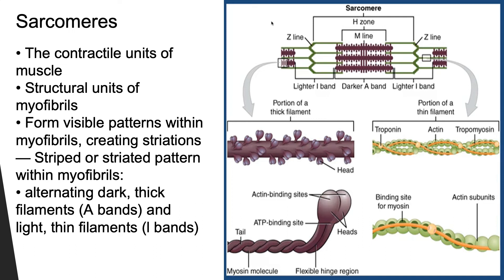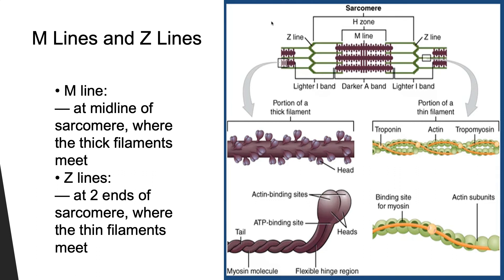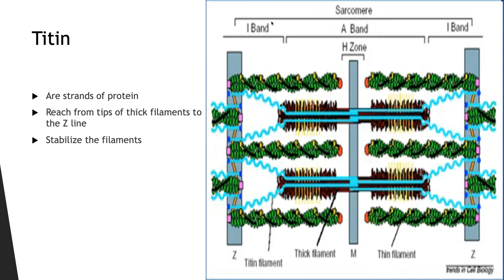The sarcomere is the contractile unit of the muscle and a structural unit of myofibrils. They form visible patterns within the myofibrils and create those striations — striped or striated patterns — which are alternating dark thick filaments (A-bands) and light thin filaments (I-bands). The M-line is the midline of the sarcomere where the thick filaments meet, and the Z-line is at the two ends of the sarcomere where the thin filaments meet. Titin strands are proteins that reach from the thick filaments to the Z-line to help stabilize the filaments.